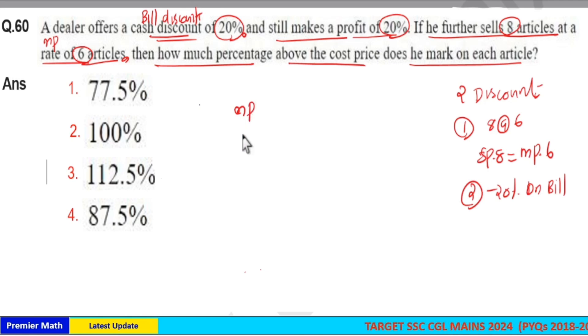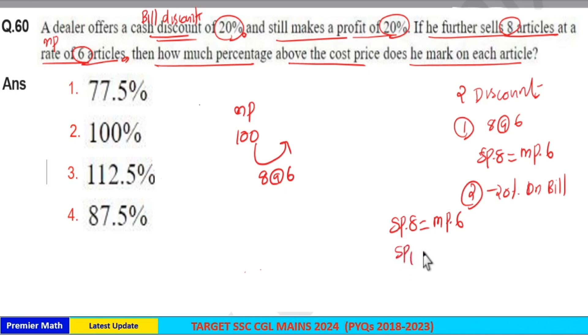Consider marked price of your article as 100 rupees. Now you get the first discount, 8 at the rate of 6 articles, which means selling price of 8 articles is same as marked price of 6 articles. So selling price of 1 article is equal to 6 by 8 of marked price, which is 3 by 4 of marked price.